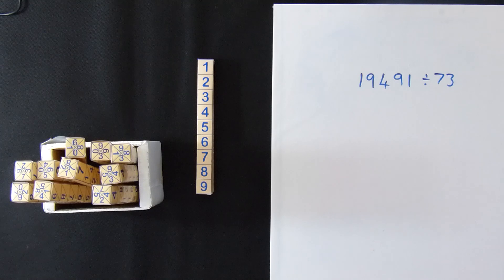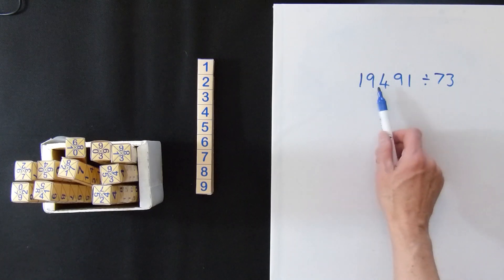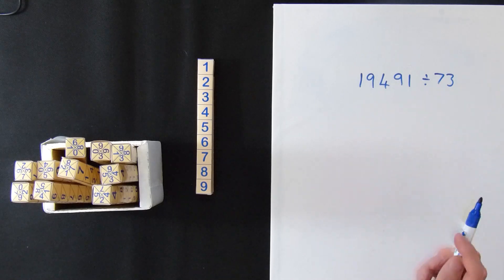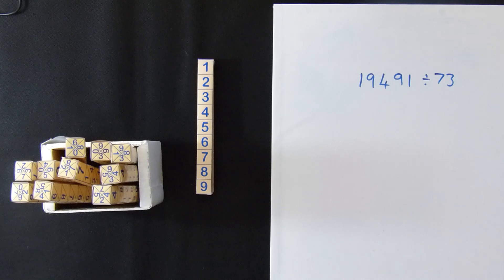The 19491 is an interesting number by the way because you can read it the same both ways, 19491, and what it's called is a palindromic number. But anyway, let's get on with the division.